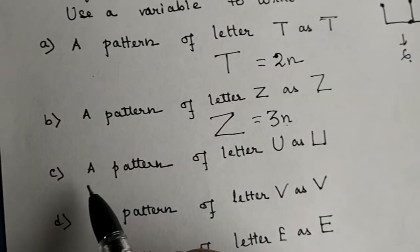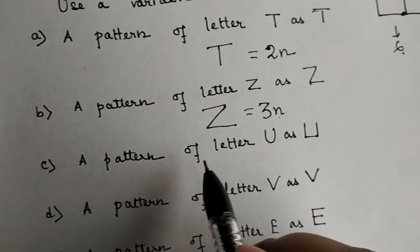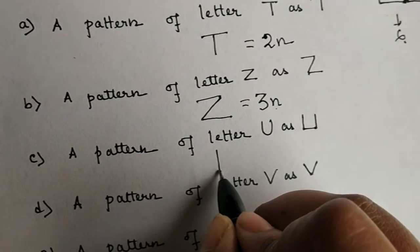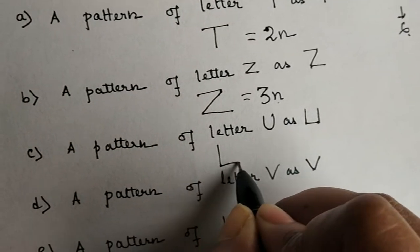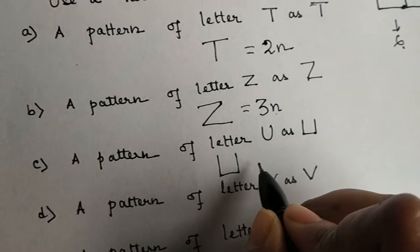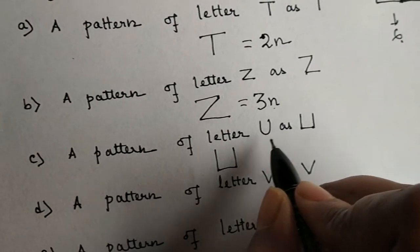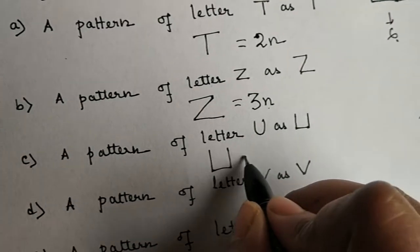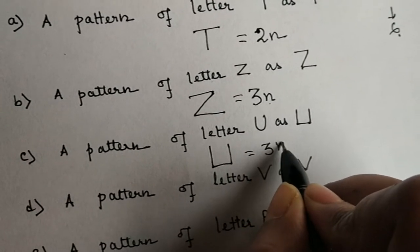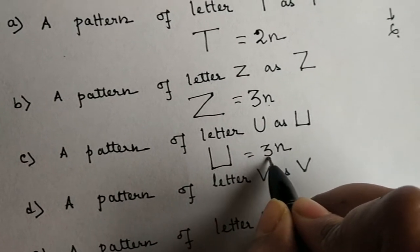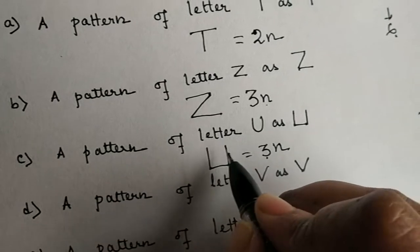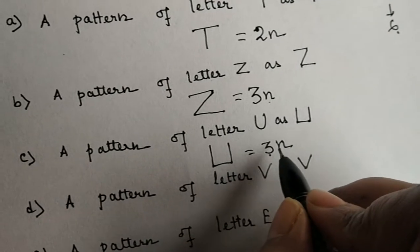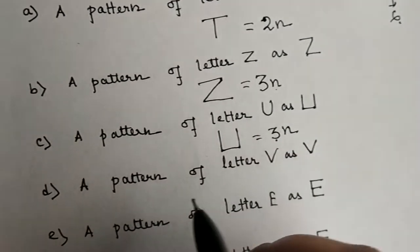Coming to the next part — a pattern of the letter U. Here we can see that 3 mastics are used to form U. That means the rule will be 3n, where 3 is the number of mastics in one alphabet and n is the number of U's.